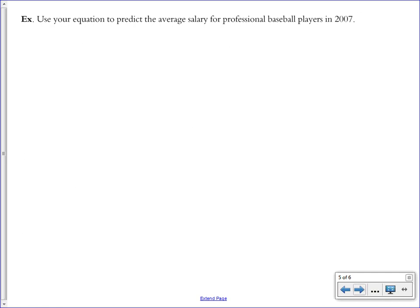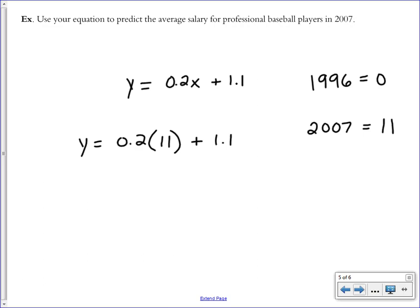And you're often asked to use your equation to predict something that's going to happen in the future that would be off your graph. So we're going to use our equation to predict the average salary for baseball players in 2007. So our equation, if you remember, was 0.2x plus 1.1, and we're asked in the year 2007. So that's our x variable. That's our year. But if 1996 was time equals 0, then 2007 would be 11. So when we plug this into our equation, just remember to use 11 as x and not 2007. To evaluate this, and you can round it because this is a word problem, we're talking about money. It looks like the average salary in 2007 we can predict to be 3.3 million dollars. And that is all.